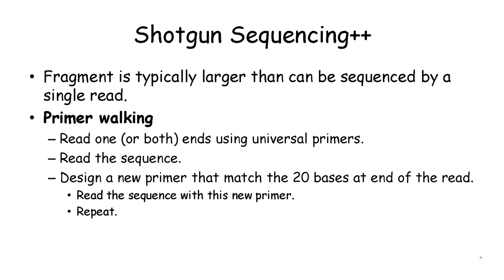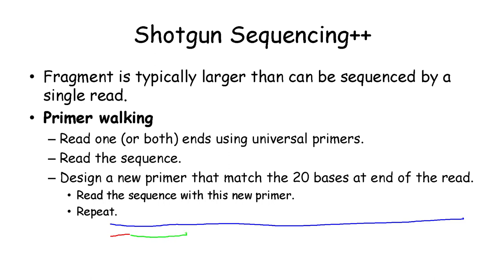A method for overcoming the size limitation of Sanger sequencing is primer walking. In primer walking, we read a sequence from one end — say its first 300 nucleotides. Now that we know the first 300 nucleotides of our DNA, we then design a new primer that matches the last part of those 300 nucleotides and read the sequence again from that point onward. We repeat this process to read the entire sequence.